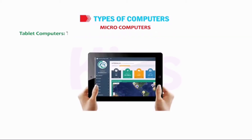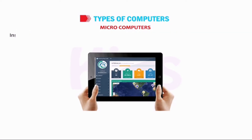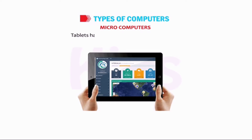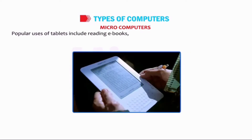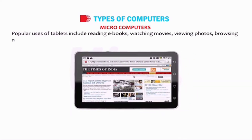Tablet Computers: these computers are smaller and lighter than laptop computers but bigger than smartphones. Instead of a keyboard and a mouse, tablets use a touch-sensitive screen for typing and navigation. Tablets have 7 inch, 8 inch or 10 inch screens. Popular uses of tablets include reading e-books, watching movies, viewing photos, browsing the net, etc.